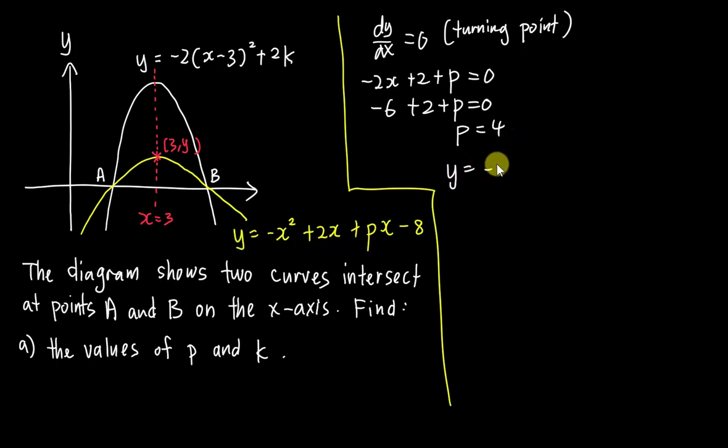So let's sub into this equation. So y equals negative x square. So p is 4, 2x plus 4x which is 6x, isn't it? 6x minus 8.